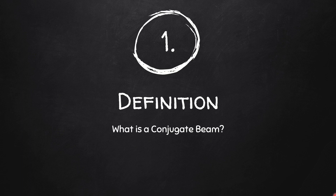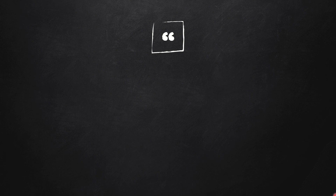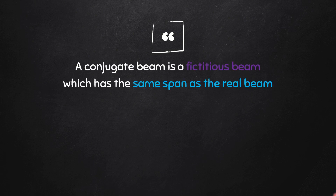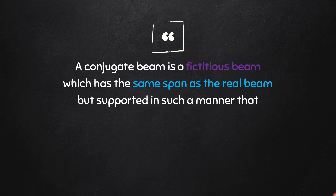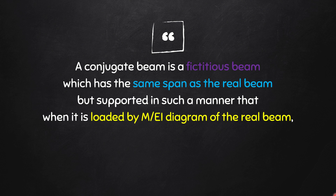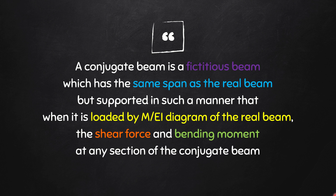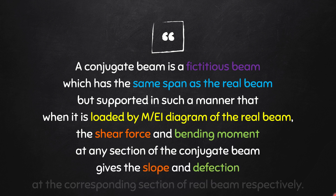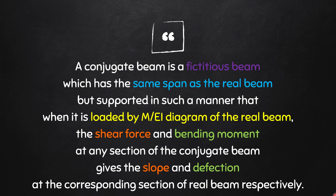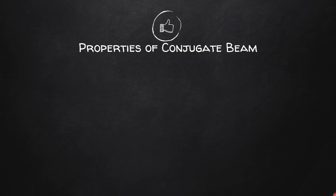A conjugate beam is a fictitious beam which has the same span as the real beam but supported in such a manner that when it is loaded by the M/EI diagram of the real beam, the shear force and bending moment at any section of the conjugate beam gives the slope and deflection at the corresponding section of the real beam respectively. I have broken this down into six properties — if you remember these, you can write the definition on your own.